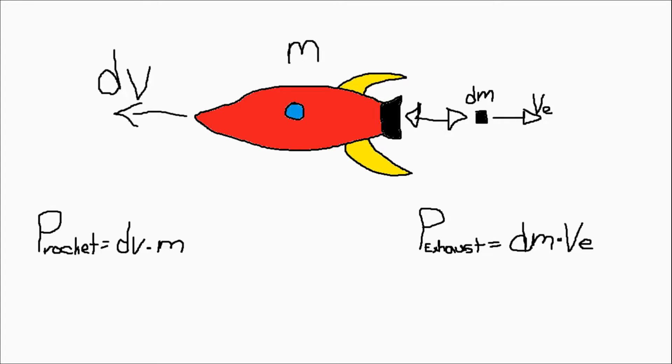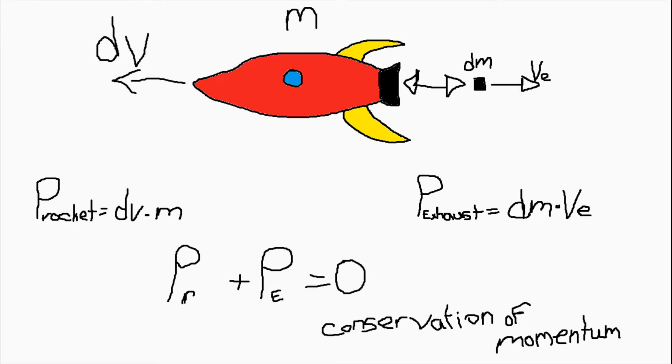Since we said that this is a closed system, we can assume that the sum of the rocket's momentum and its exhaust's momentum should equal out to zero, because of something called the conservation of linear momentum.